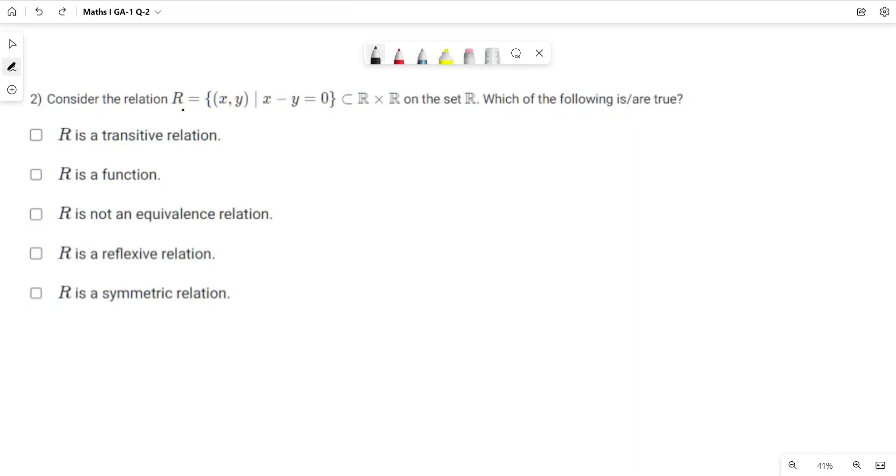Consider the relation R: {(x,y) | x - y = 0} where x, y belong to R × R on the set of real numbers. Which of the following is true?